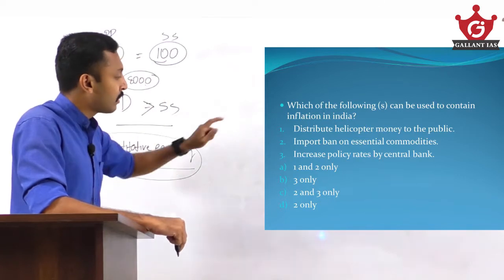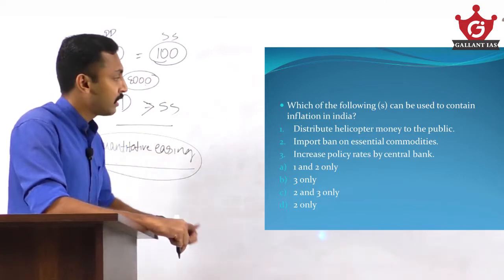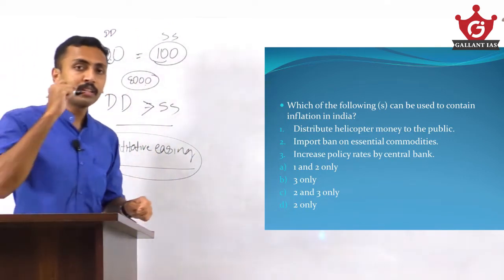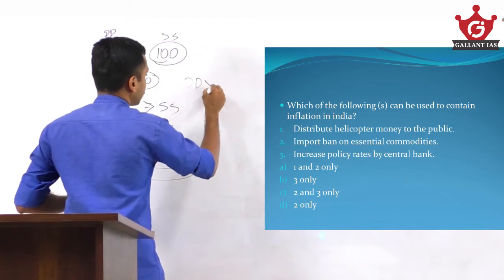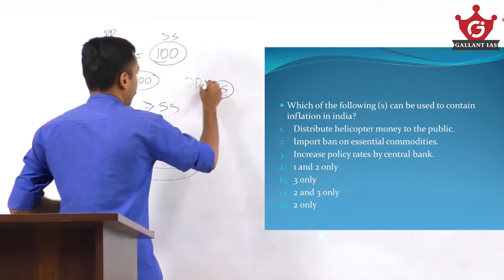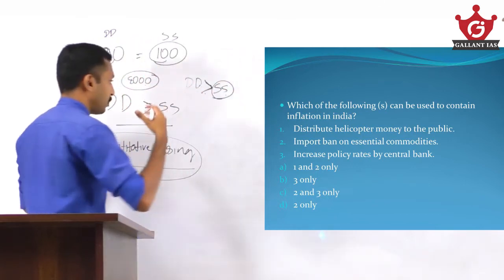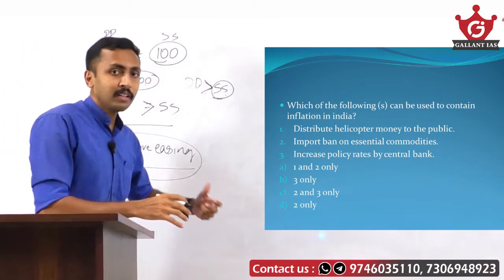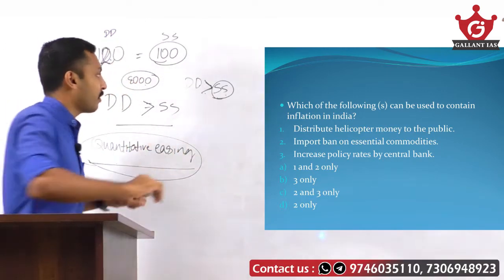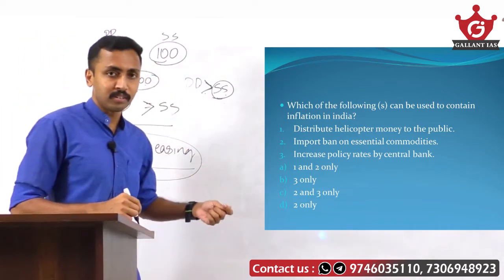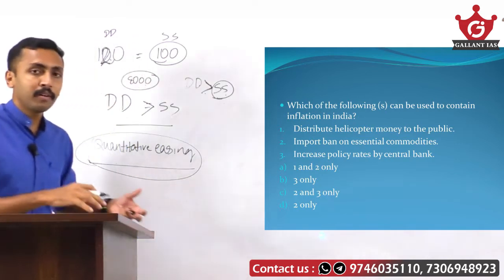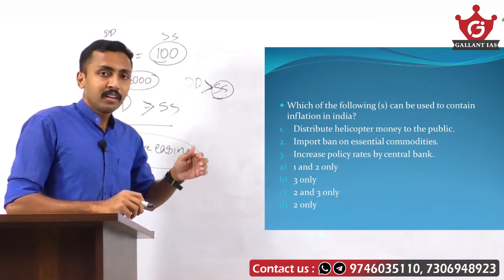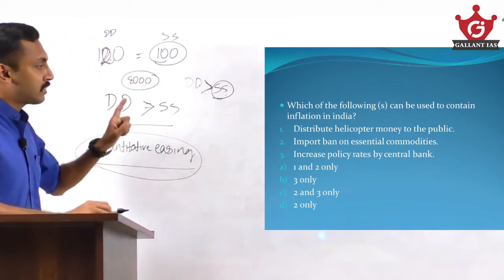Use the elimination method. If the first statement is wrong, you can eliminate options containing it. Second statement: import ban on essential commodities. The main cause of inflation is excessive demand over supply — supply not meeting demand. Supply comes from both domestic market and foreign market, through imports or domestic production. If an import ban is enabled, the supply will further reduce, which will further increase inflation. So the second statement is also wrong.